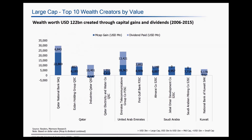We start with identifying the top 10 wealth creators in the large cap segment, measured by value. These 10 stocks have created an aggregate wealth of close to about 122 billion, both through capital gains and dividends, during the 2006 to 2015 period. Most of the stocks generated both positive market cap and dividend returns. Exceptions include Industries Qatar, which lost market cap but created significant wealth through dividends, and Jamal Umar Development Company and South Arabian Mining Company, which created wealth only through capital gains and paid no dividends.